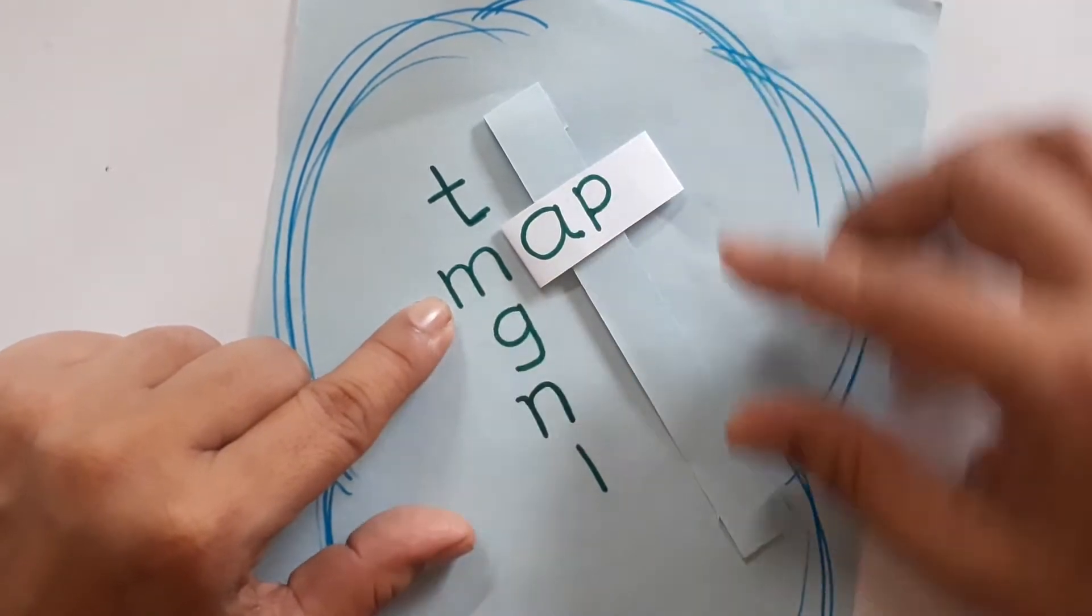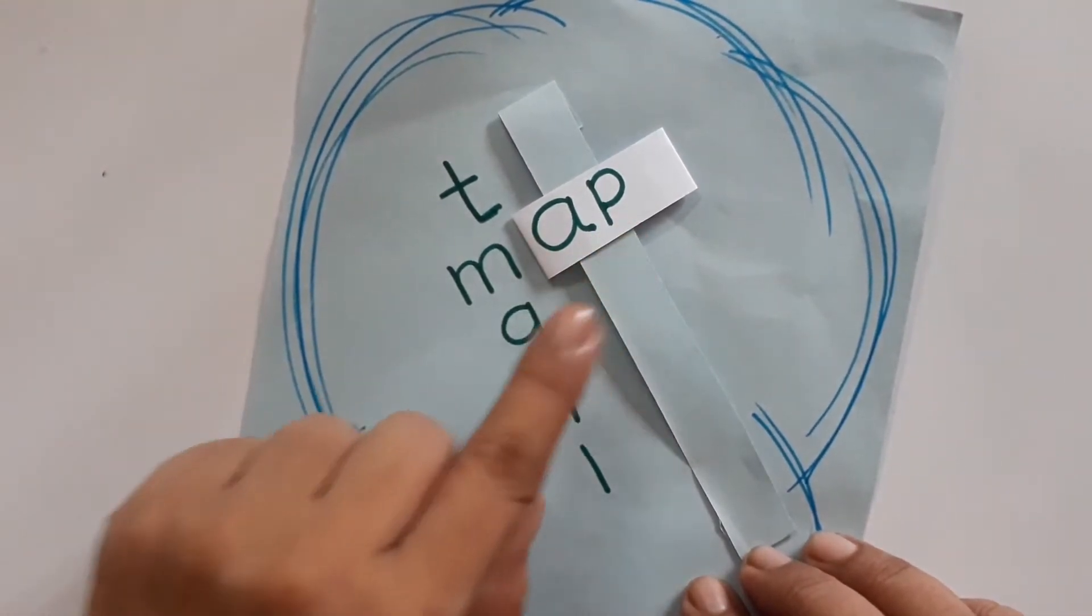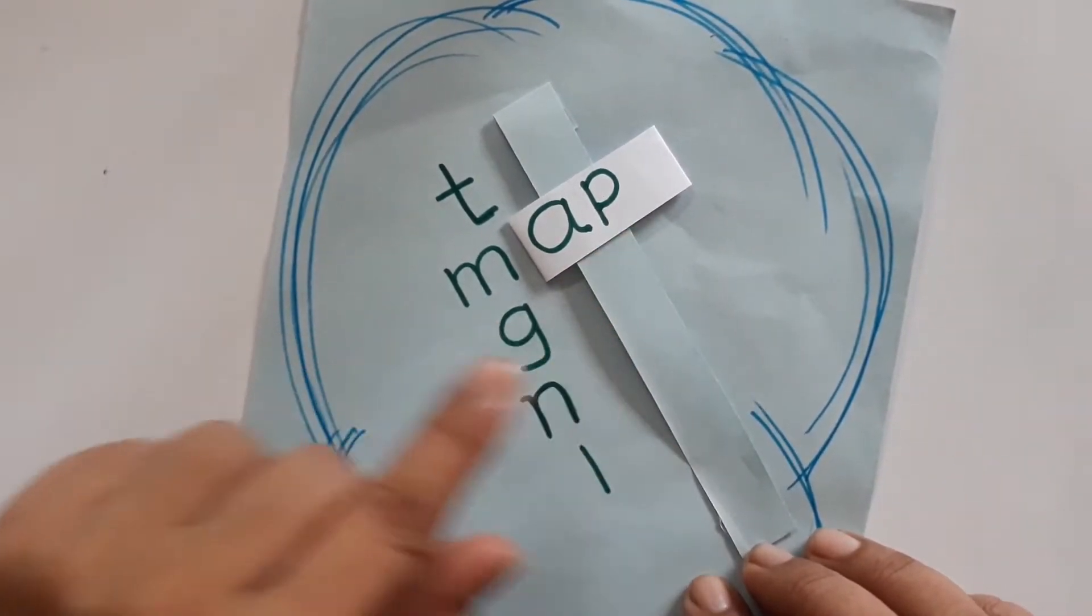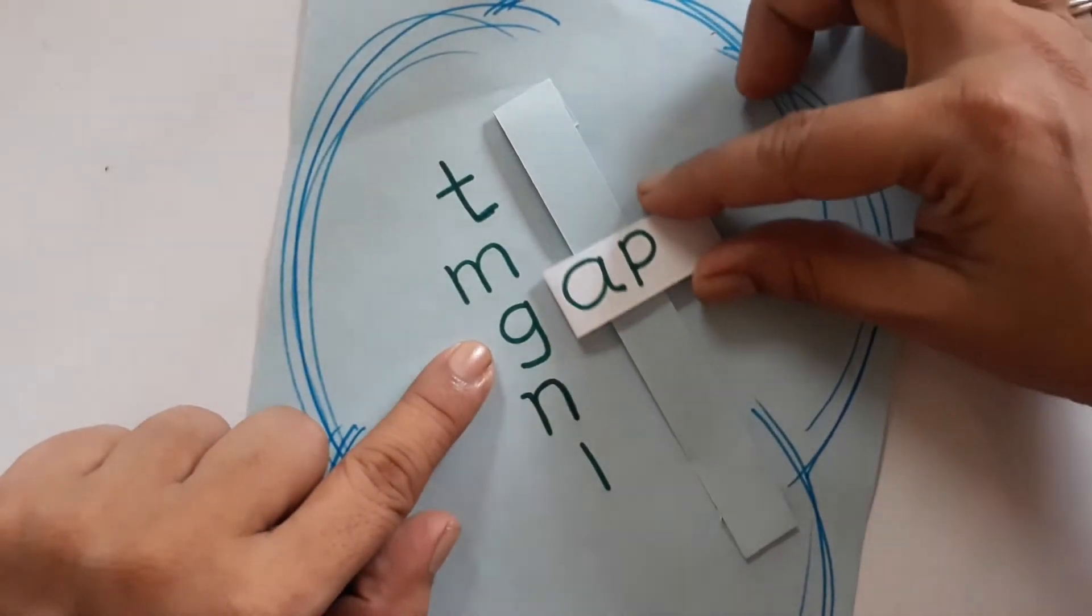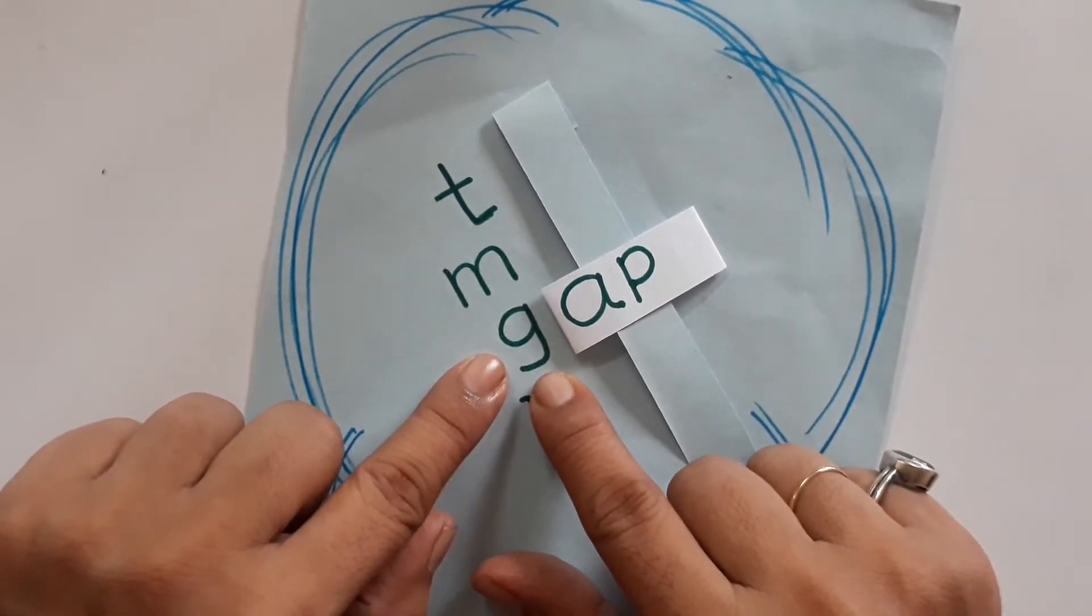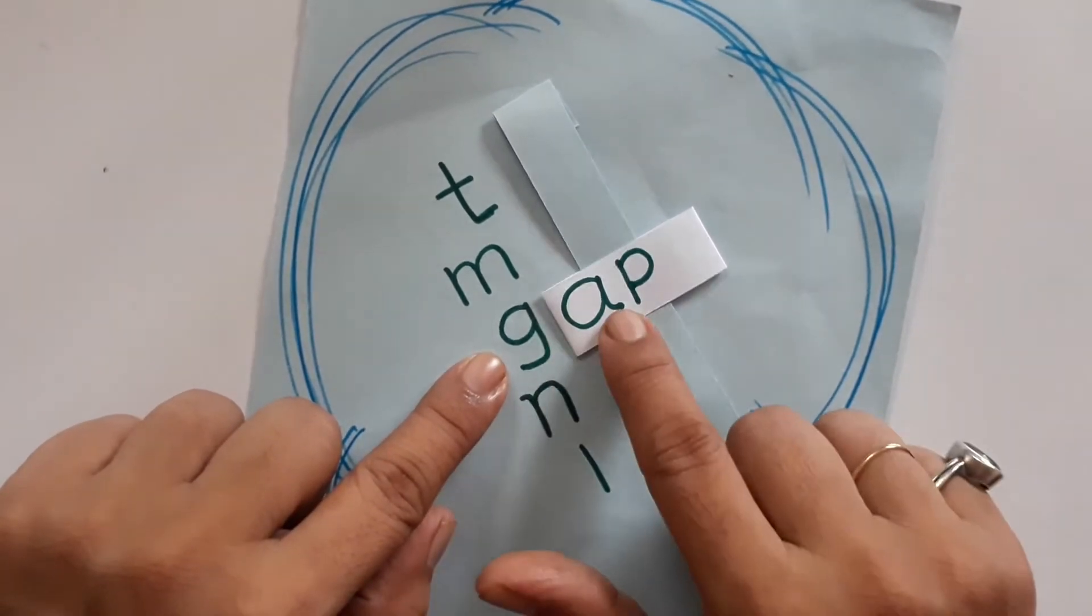M says M. M-A-P, map. M-A-P, map. G says G. G says G. G-A-P, gap.